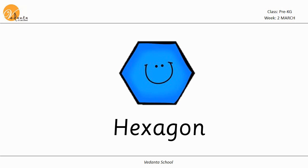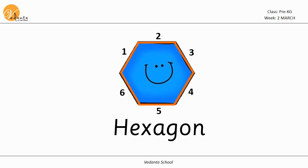A hexagon has 1, 2, 3, 4, 5 and 6 sides.